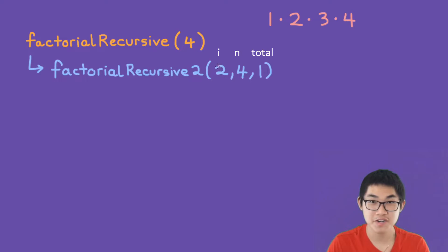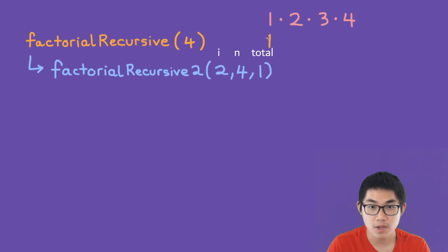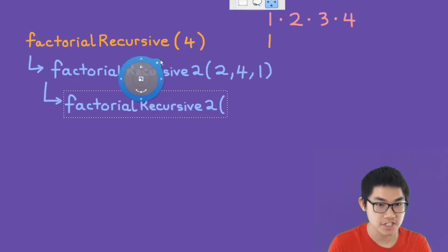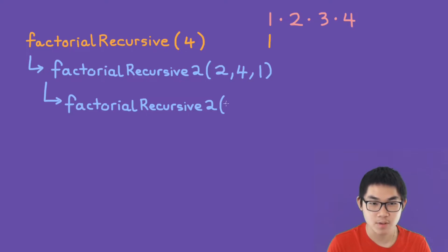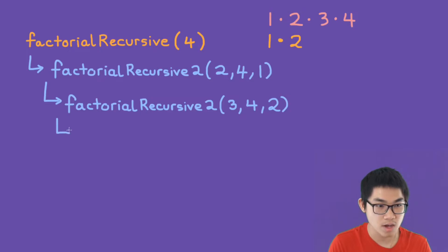The first parameter is the i value — remember the for loop goes from i=2 to i=4. The second parameter is the number we want the factorial of, and 1 is simply the total, which always starts at 1. The function calls itself: i increases from 2 to 3, n stays 4, and the new total is 1 times 2, which gives 2.